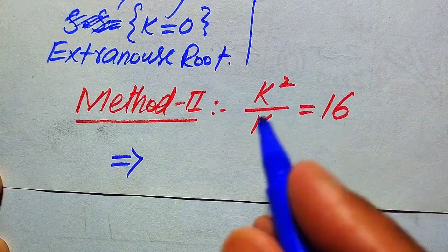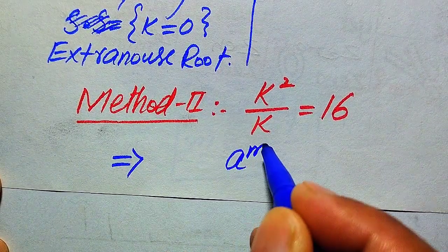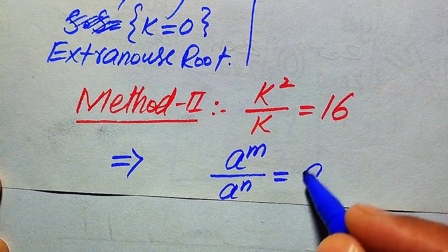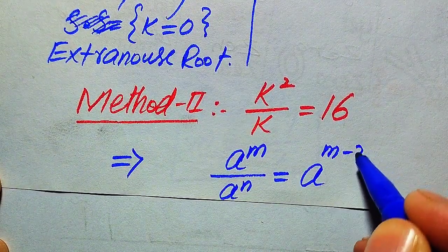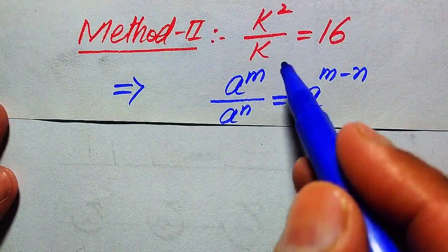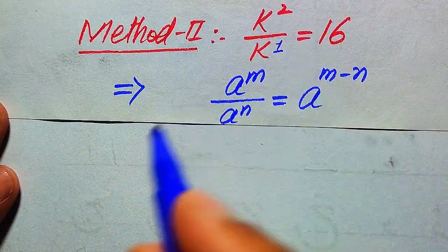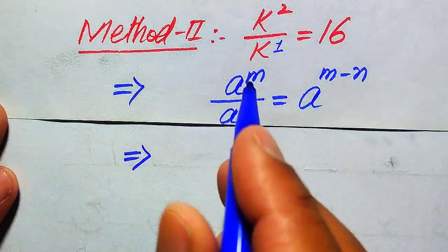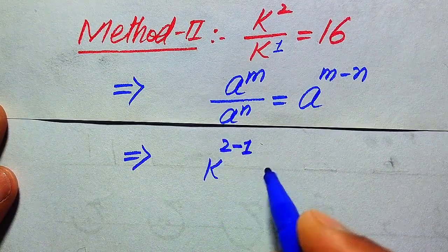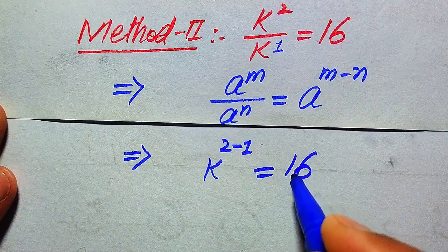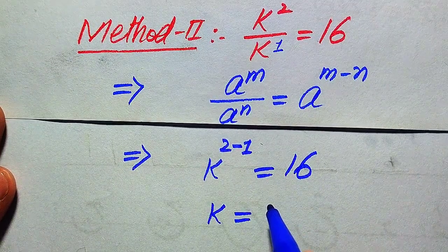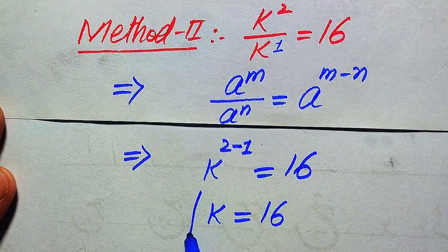We use the exponential law: a to the power of m divided by a to the power of n equals a to the power of (m minus n). Applying this rule, the exponent of the denominator term is 1, so we get k to the power of (2 minus 1) equals 16, giving k to the power of 1 equals 16, so k equals 16.